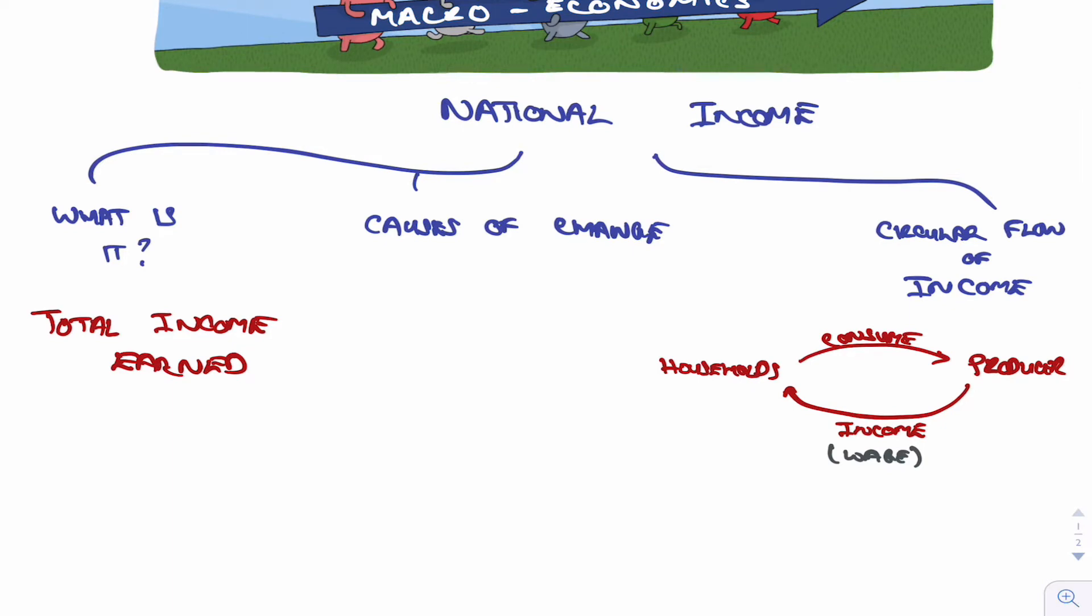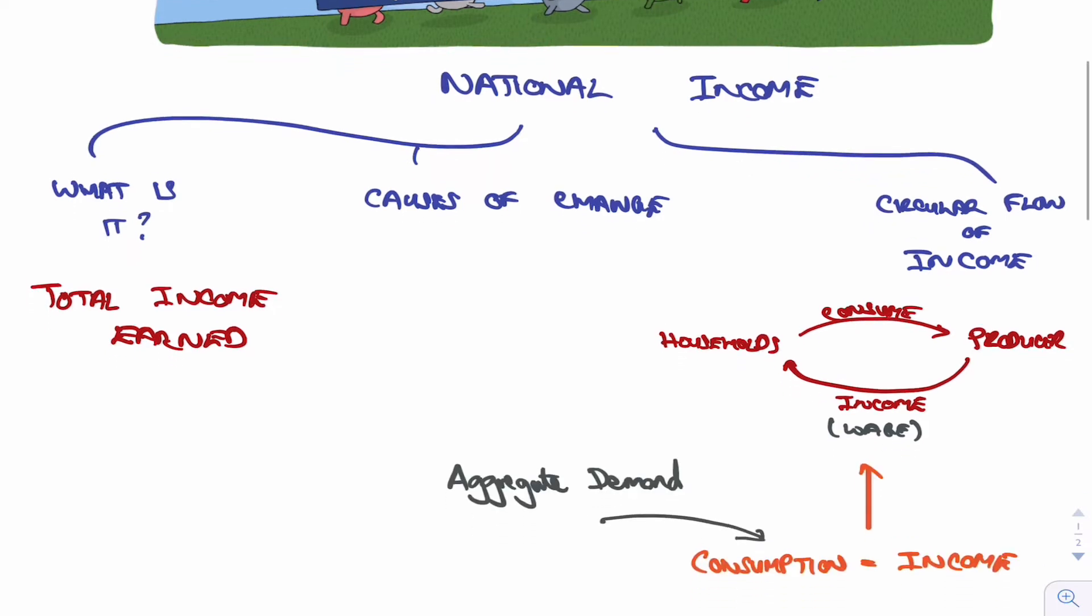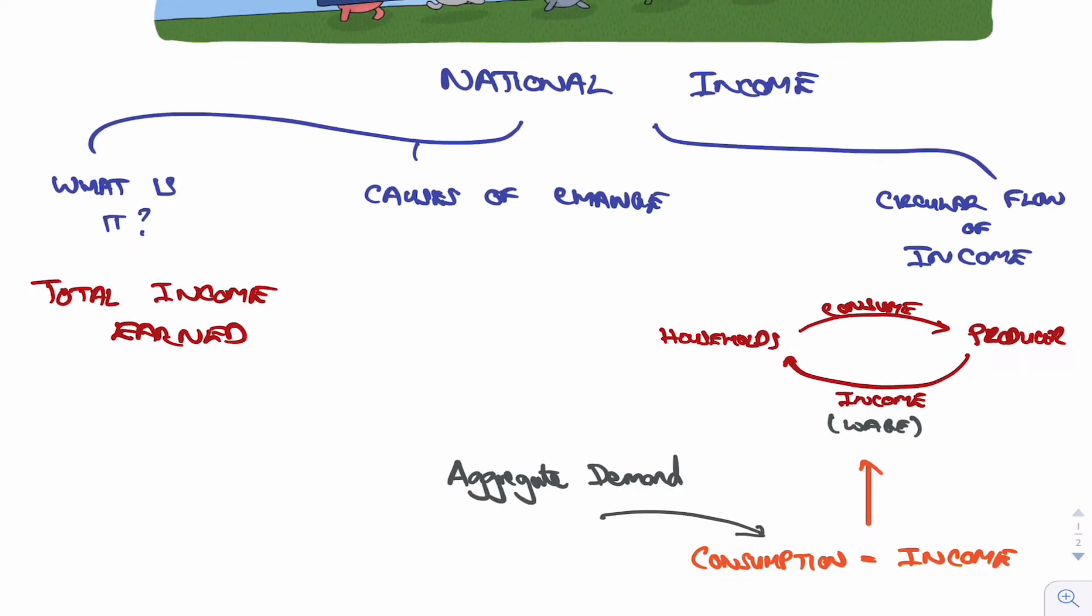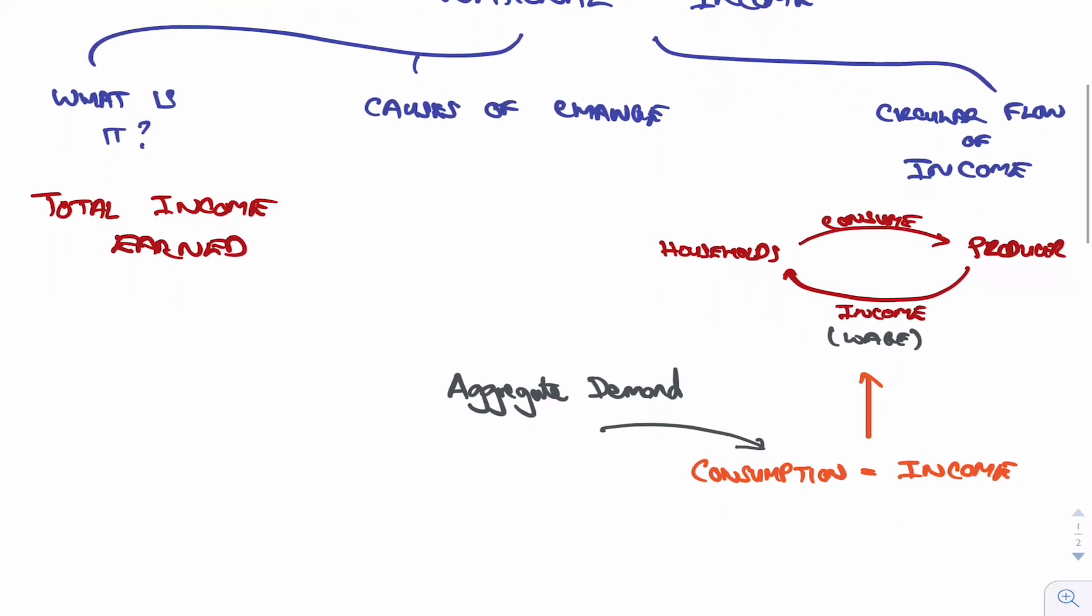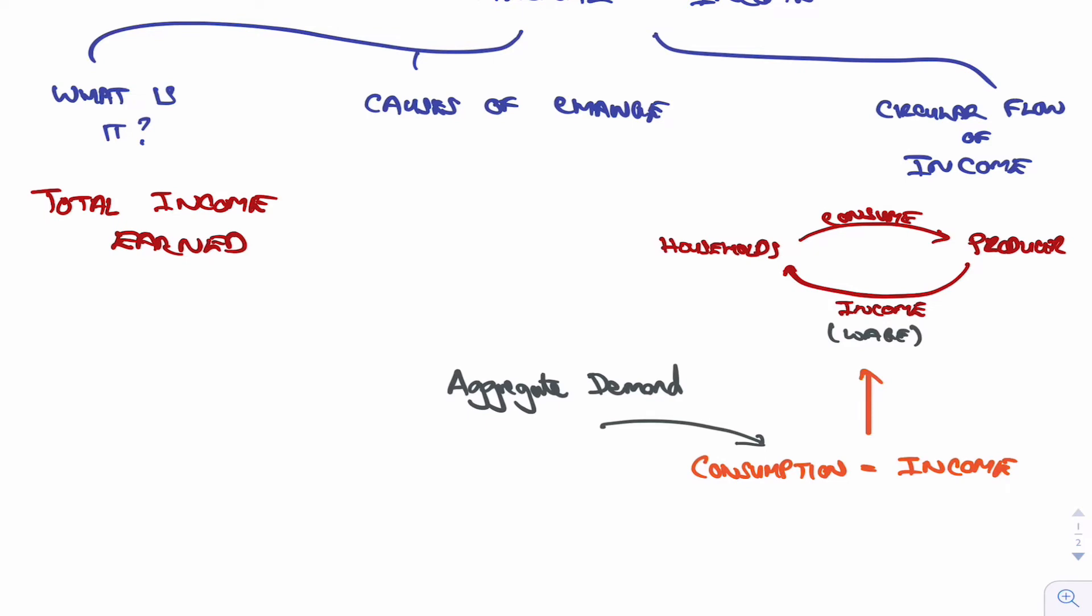Now that's obviously a very simplified model where what we're saying is consumption by the households absolutely equals the income from the producer, and so it just goes round and round and it's in perfect equilibrium. We also call the consumption there aggregate demand, just to introduce that term to begin with.